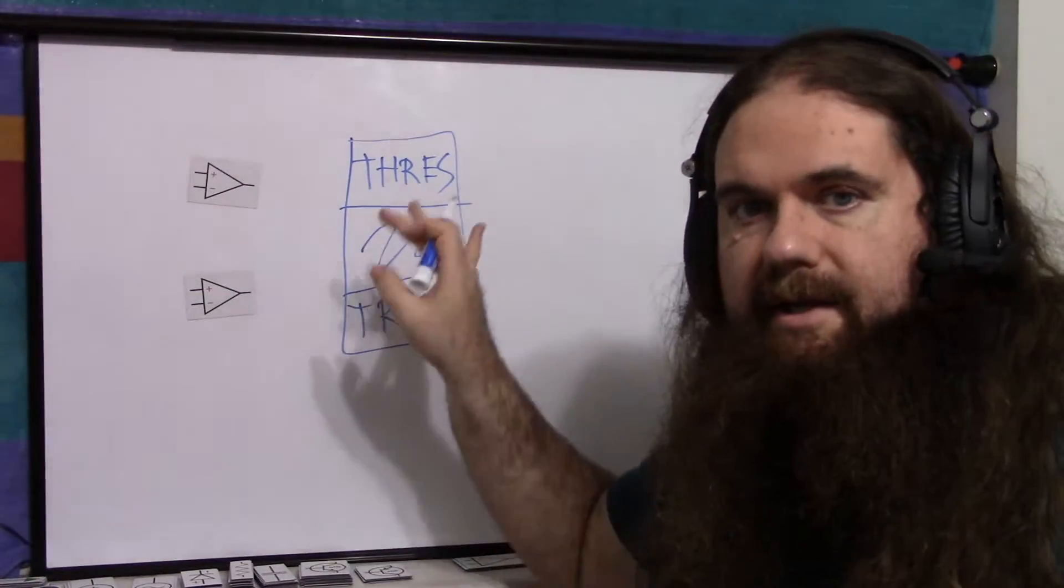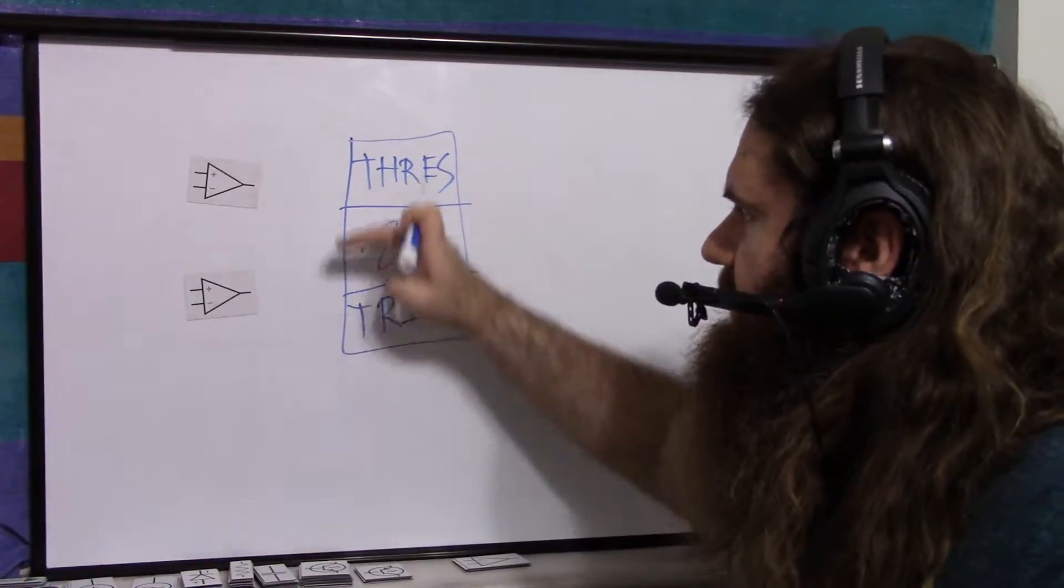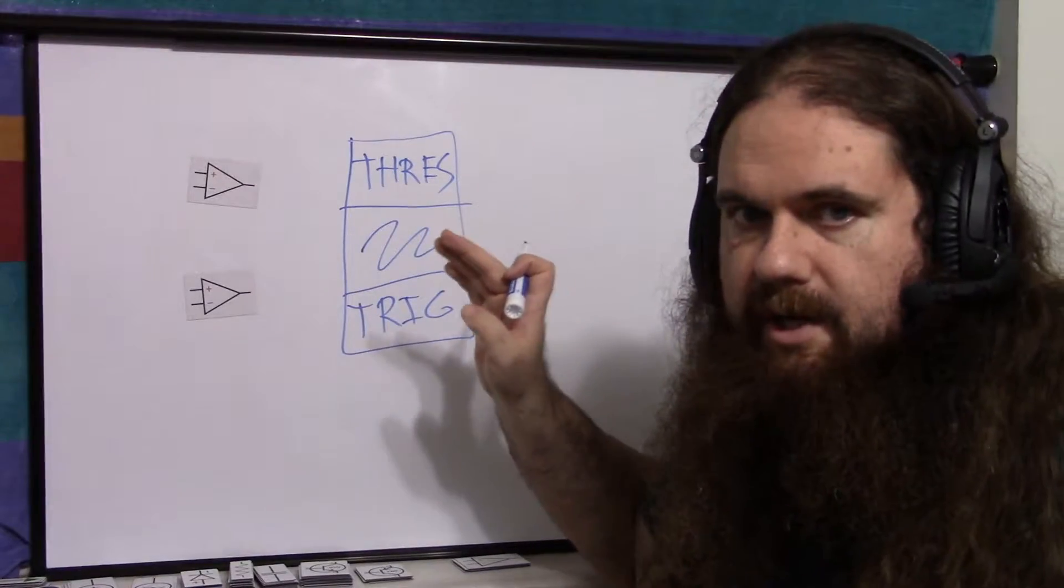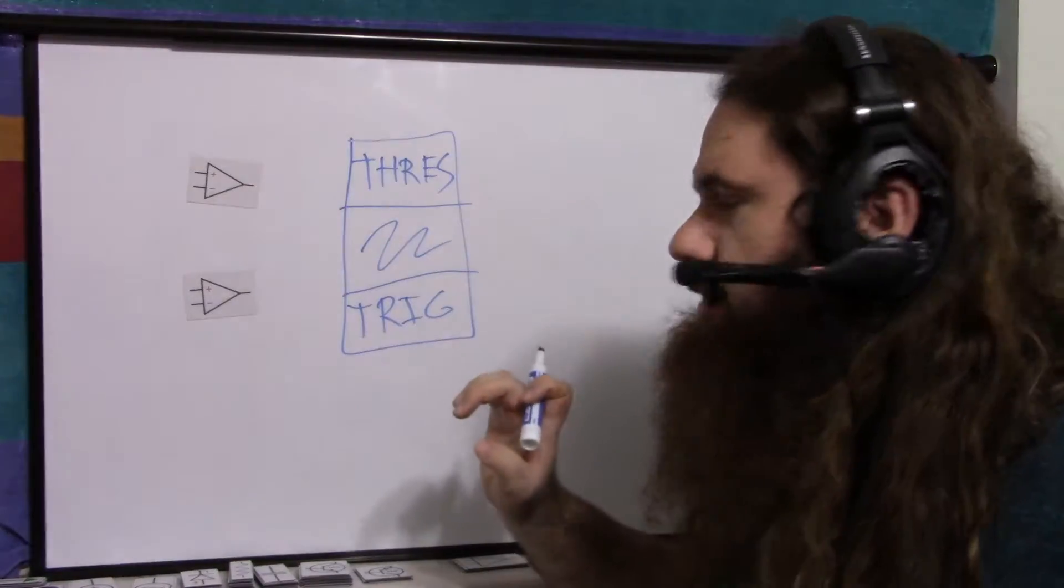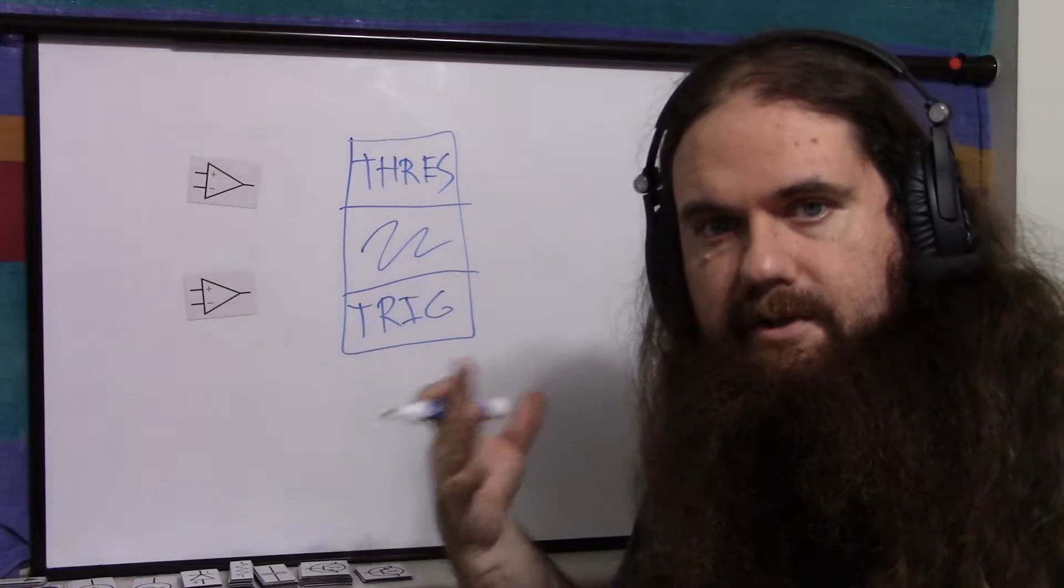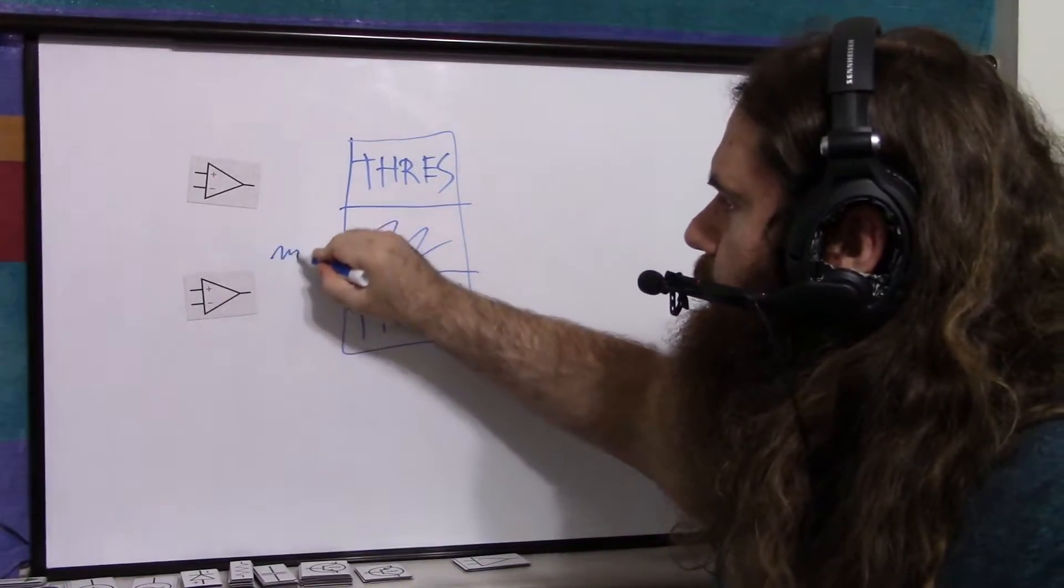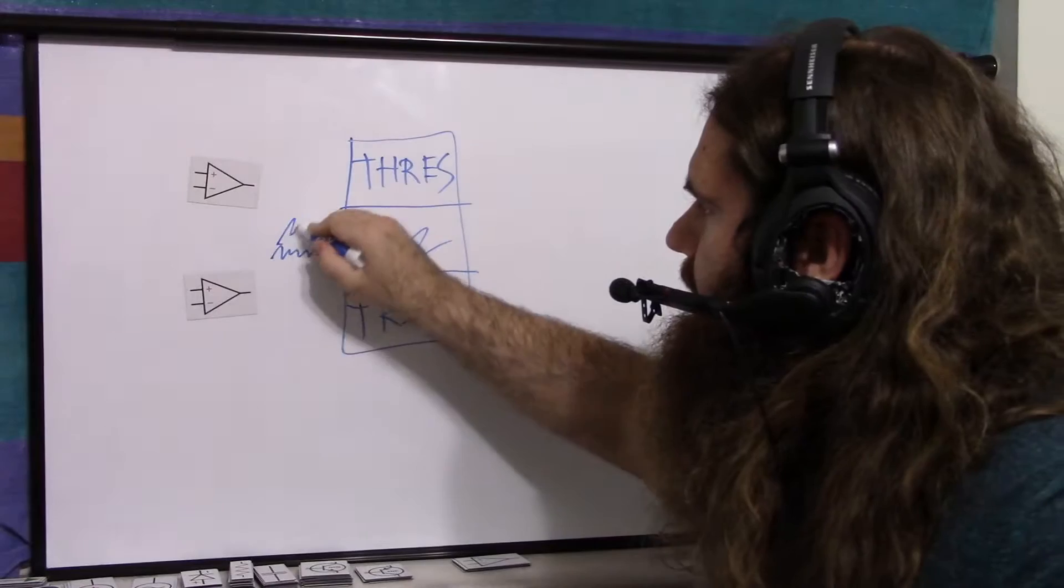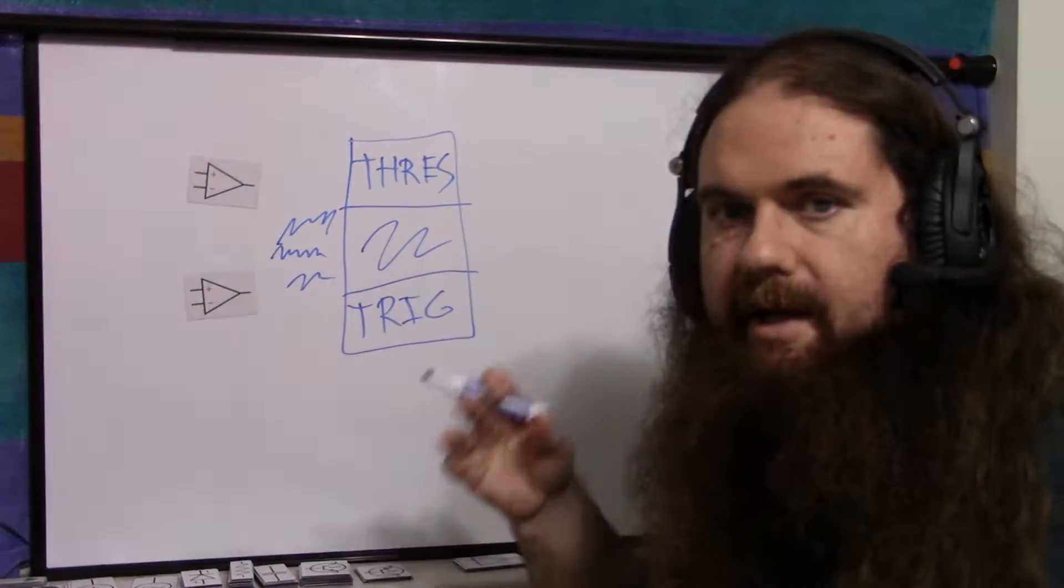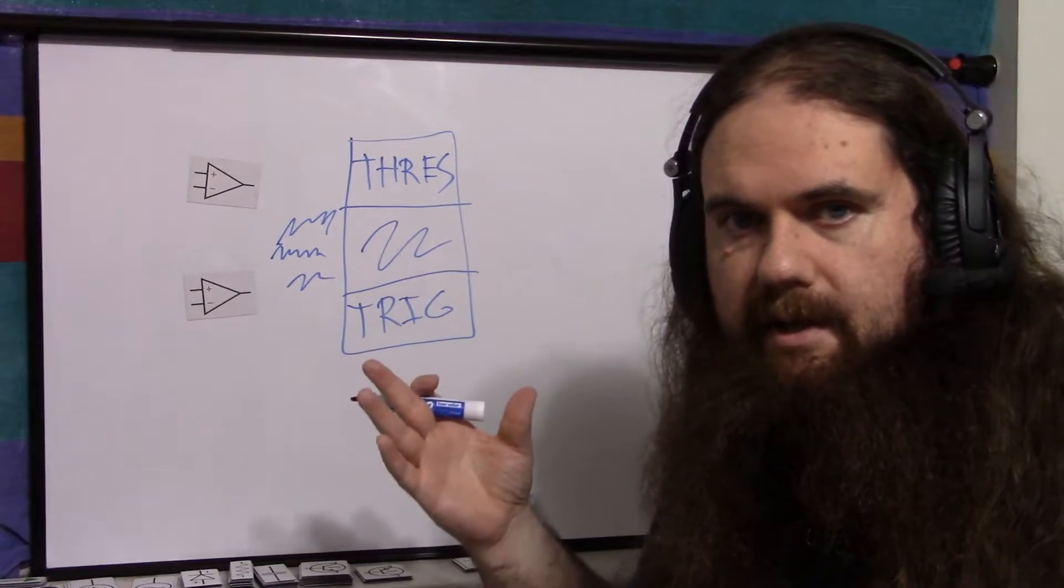And you've got this region in the middle. It's not that it's off in the middle. It's that it has to leave this region to change. It has to go into the threshold region or into the trigger region to switch. And the effect of this is, if you have a wiggly signal in the middle, or even up here or down here, it's not going to give you a messy output.